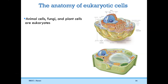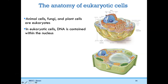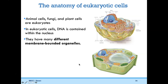Animal cells, fungi, and plant cells are all eukaryotes. What is characteristic of all eukaryotic cells is DNA contained within a nucleus. Both animal cells and plant cells have a nucleus that contains DNA, though they look a little different from each other. Eukaryotic cells also have several different organelles that are each membrane-bounded, meaning each organelle is separated by phospholipid membranes.